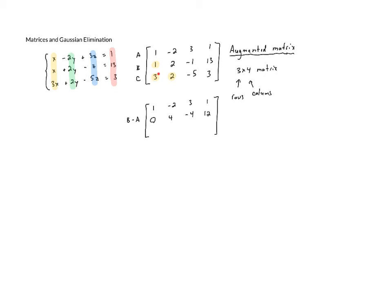Then to get rid of the 3 down here, we can take 3 times the first row, which is going to be 3A, and then we can subtract the third row from it, which is C. So 3A minus C. So if we do that, 3 times 1 is 3, minus 3 is 0. 3 times negative 2 is negative 6, minus 2 is negative 8. 3 times 3 is 9. 9 minus negative 5 is the same as 9 plus 5, which is 14. And then 3 times 1 is 3, minus 3 gives us 0.